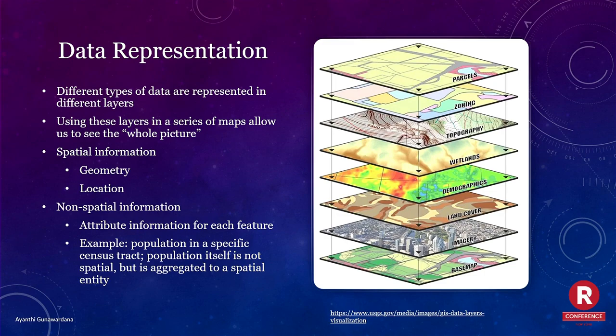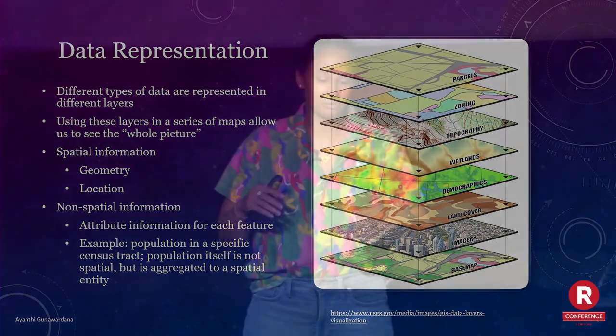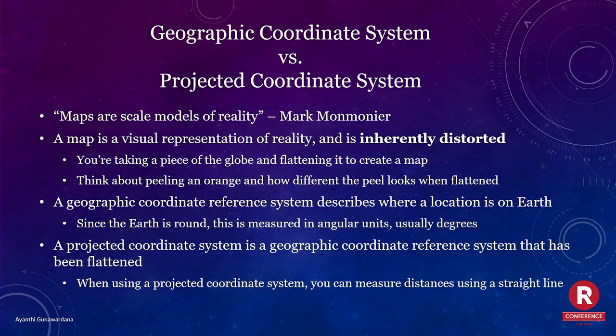Each layer is going to have two attributes: the spatial and the non-spatial. Spatial is the latitude and longitude, the location information, and then the non-spatial information. So if you have a census tract, you'll have the lat-long for that, but then you'll also have maybe the population, number of people under 18, things like that. This is a very important concept that a lot of data scientists don't really know because, if you didn't have a city planning or geography academic background, it's not really taught, but it's really important.